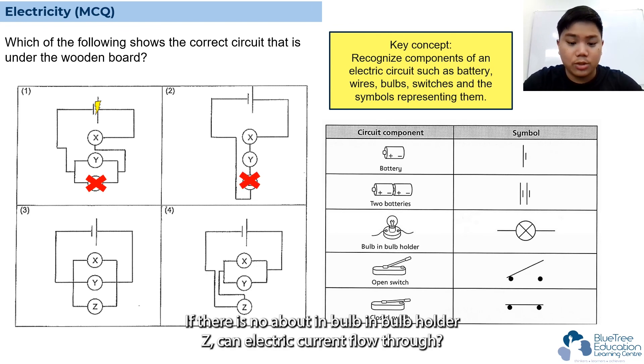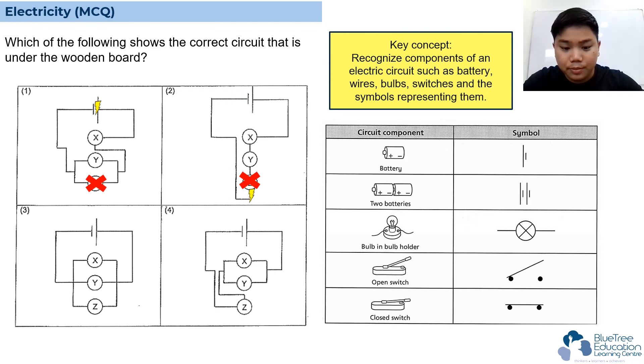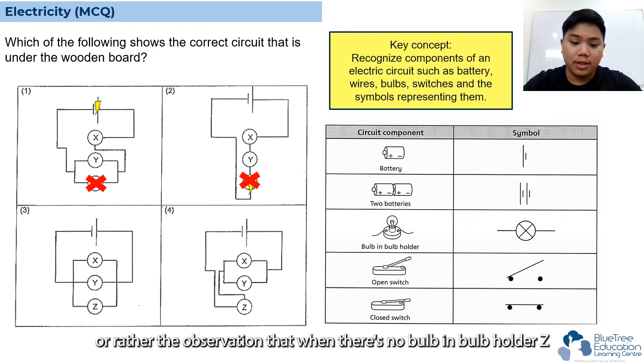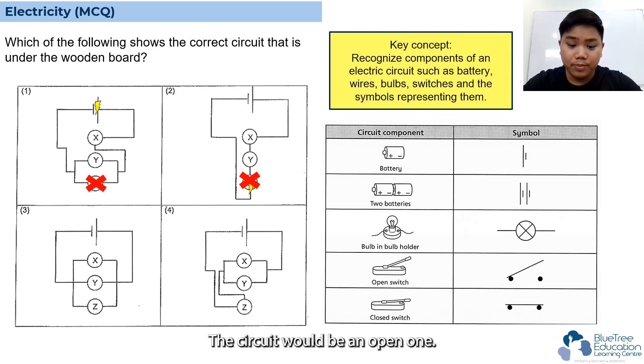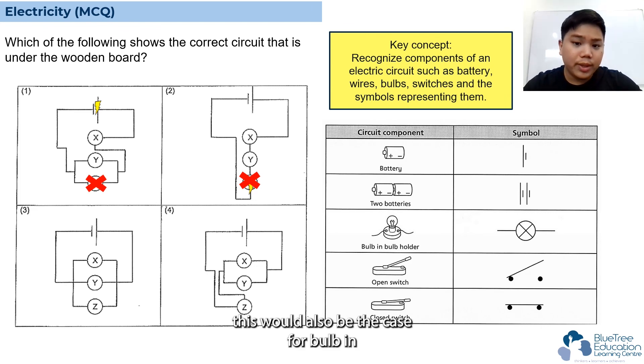Now let's look at option two. If there's no bulb in bulb holder Z, can electric current flow through? If you guessed no, you're right. It does fulfill the criteria that if there's no bulb in bulb holder Z, the circuit would be open. However, this would also be the case for bulb holders Y and X.